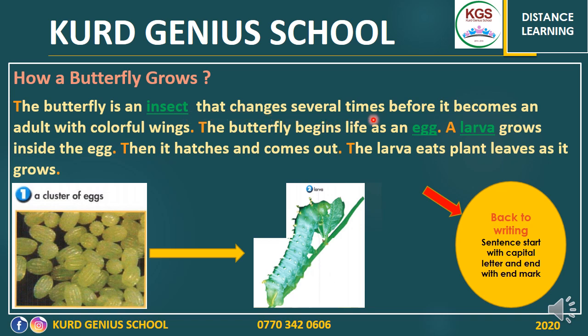The butterfly changes several times before it becomes an adult with colorful wings. Butterfly, before it becomes an adult, changes several times — it means so many times. The butterfly begins life as an egg. The first stage in the butterfly's life cycle is an egg. After that, a larva grows inside the egg.